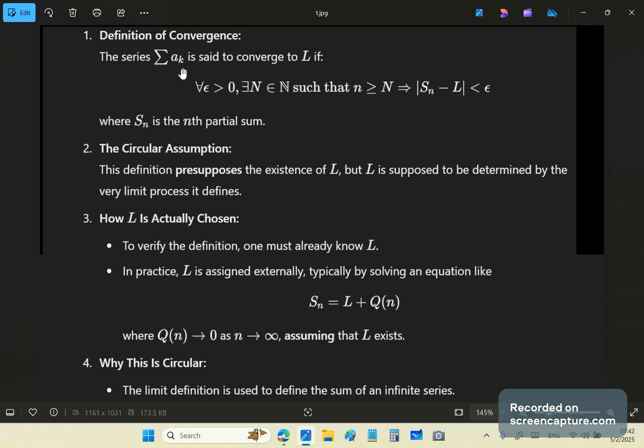So this series that you see up here, series of a_k, said to converge to L according to their definition if for all epsilon greater than zero there exists a capital N which is part of the natural numbers such that a small n which is greater than or equal to N implies that this difference is less than epsilon.